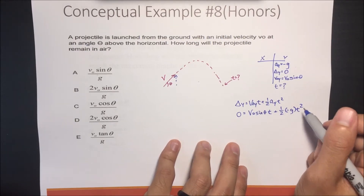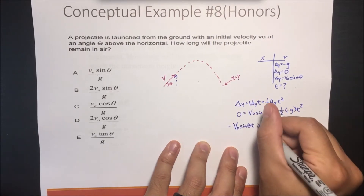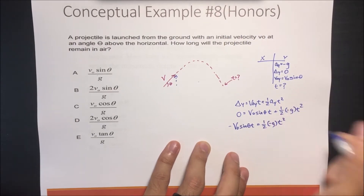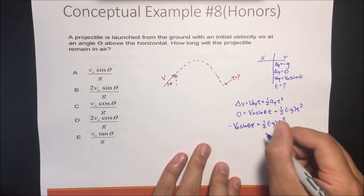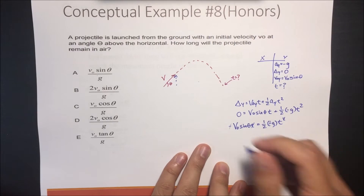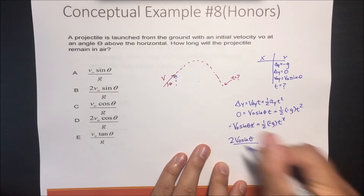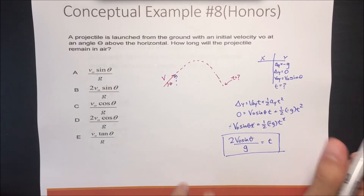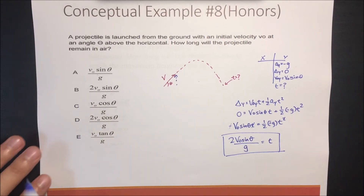Isolating t: bring the gravity term to the other side, cancel the negative, and bring the one-half over — giving: v-initial·sinθ equals (g/2)·t. So t equals 2·v-initial·sinθ divided by g. This is the answer, choice B.